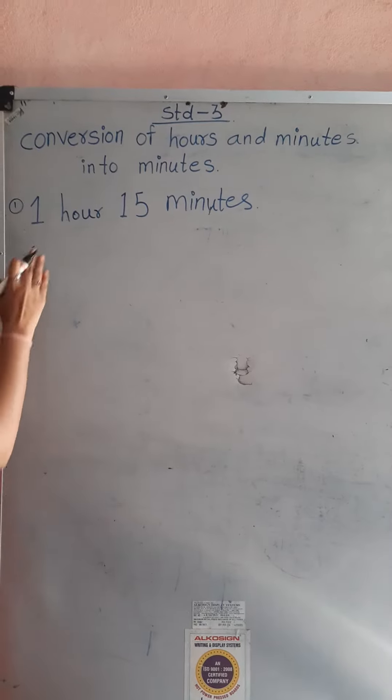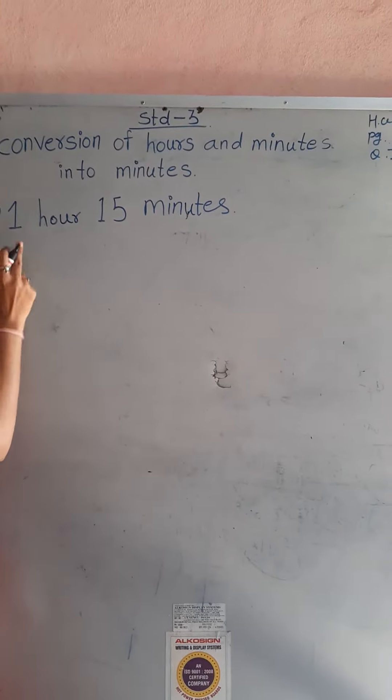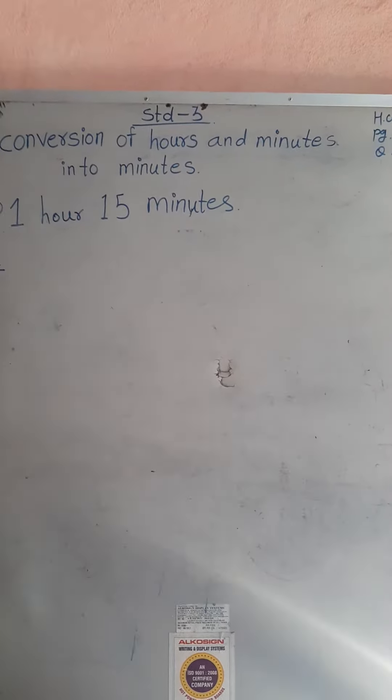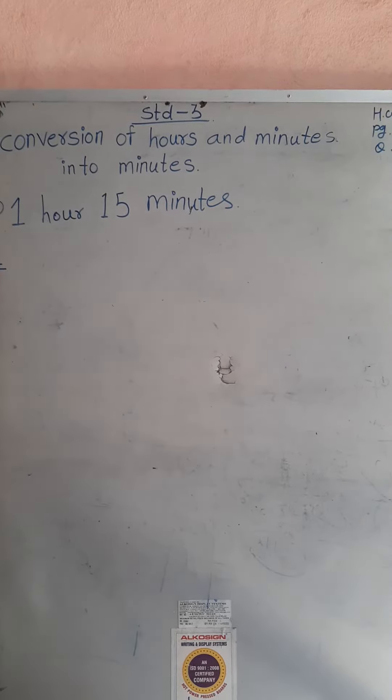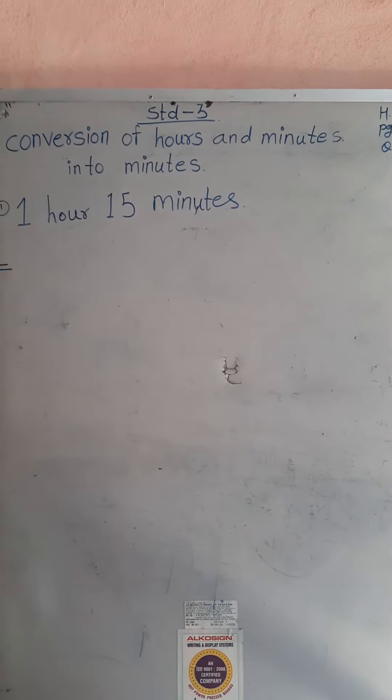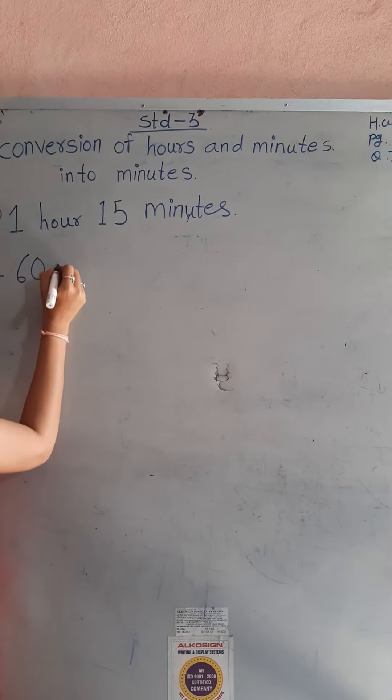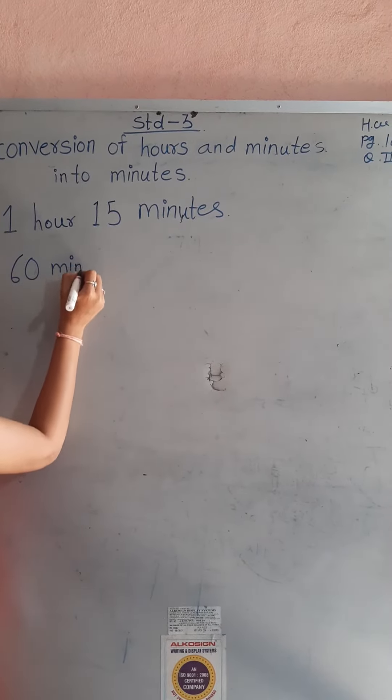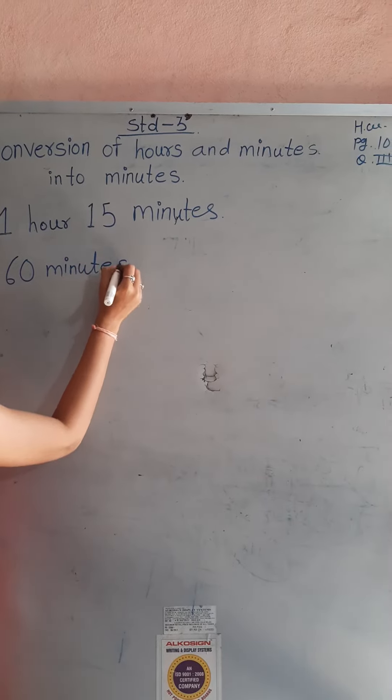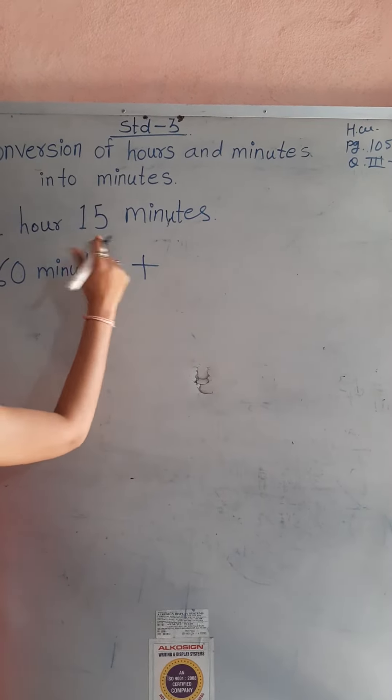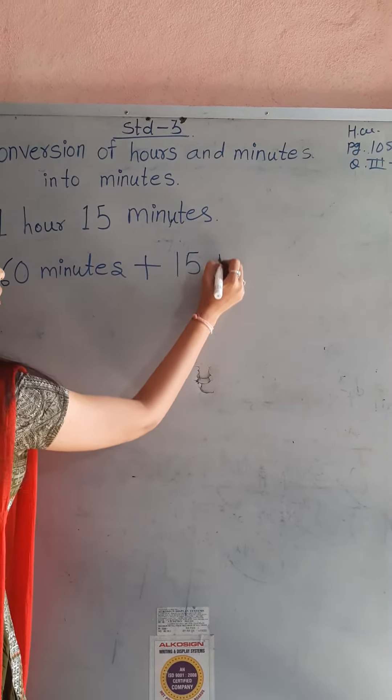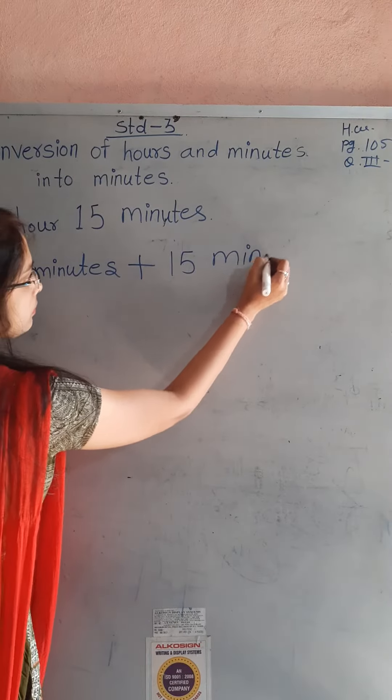How? Look at here. One hour means how many minutes? Very good. 60 minutes is equal to one hour. So write down here. 60 minutes plus that 15 minutes. 15 minutes.